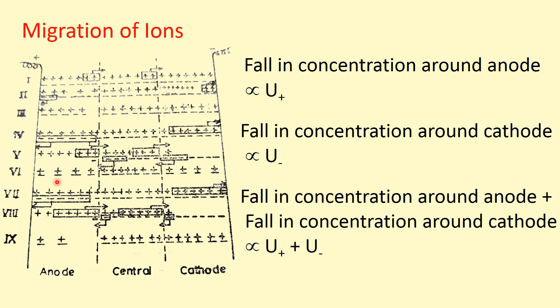The result is: at the anode compartment there are four cations and four anions; the middle compartment shows no change — seven cations and seven anions; and the cathode compartment also has four cations and four anions. Fall in concentration at anode is seven minus four = three, equal to the velocity of the cation. Fall in concentration at cathode is also three, equal to the velocity of the anion. So fall in concentration around anode is proportional to U⁺, and fall in concentration around cathode is proportional to U⁻.